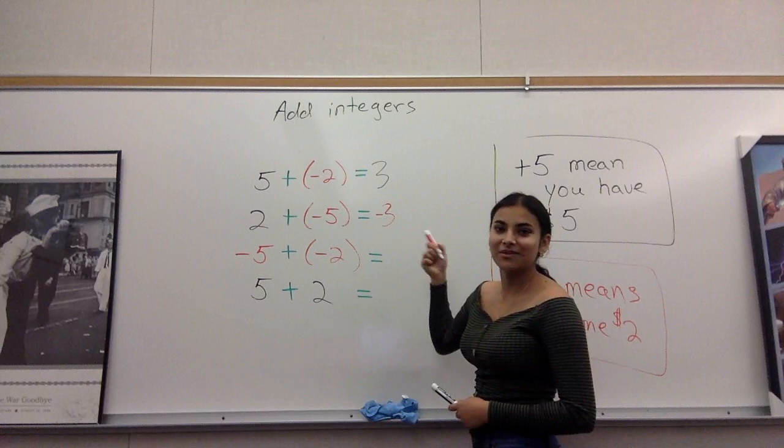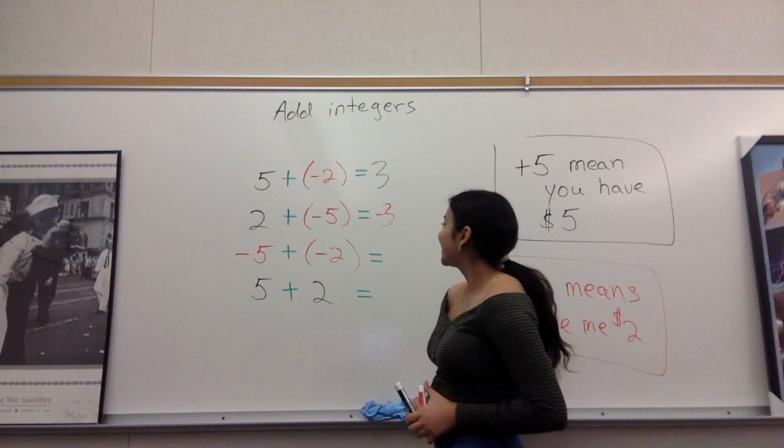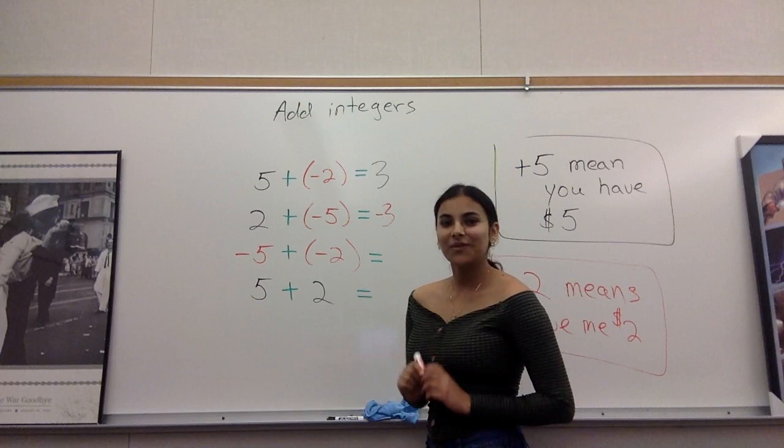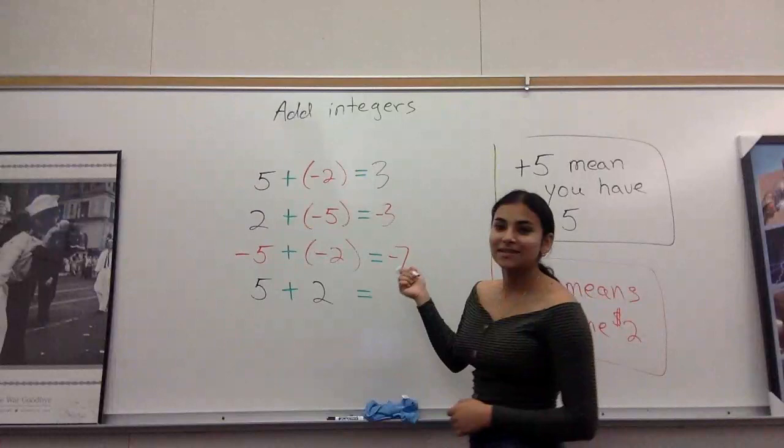And in the next problem, it gets even worse because you owe me even more money. You start off asking me for five dollars, I give them to you, and then you go and ask me for more money. You ask me for two dollars, and I'm a nice person, so I say yes, I'll give you the other two dollars. Now you owe me seven dollars, and next time I see you, I'm going to ask you to give me my seven dollars back.